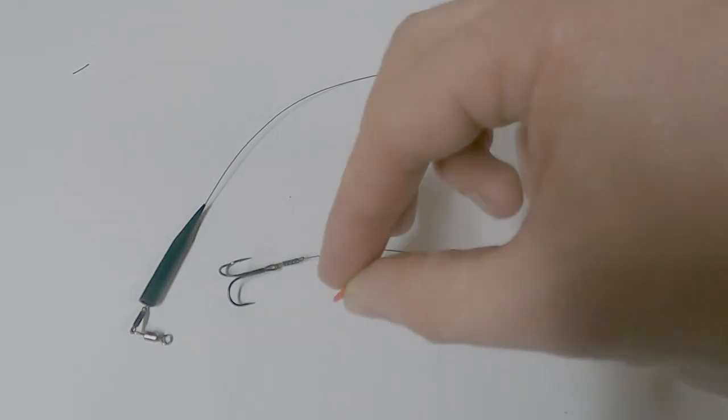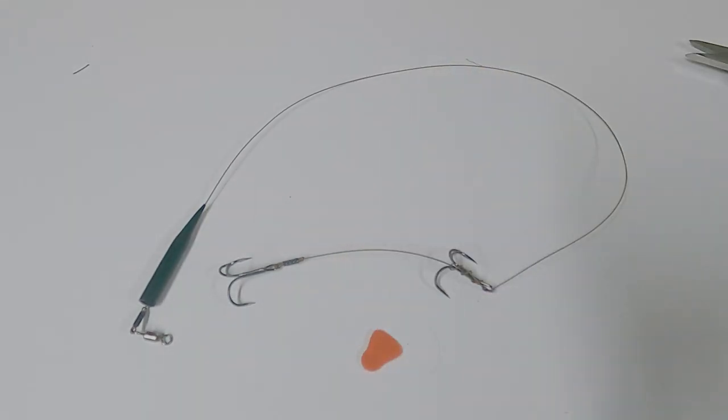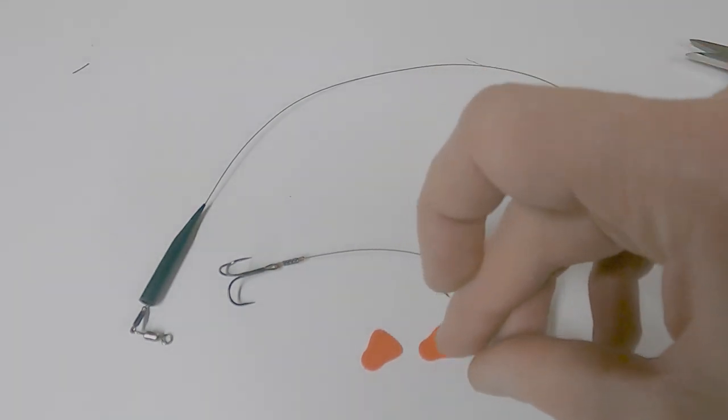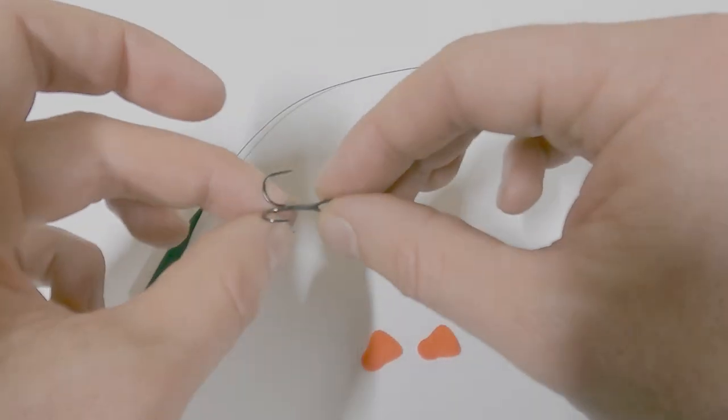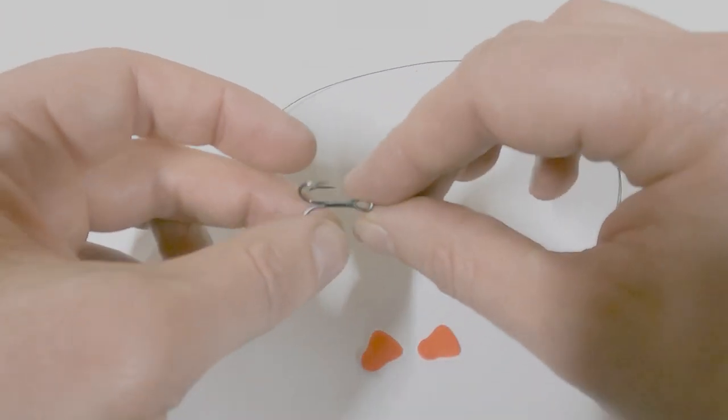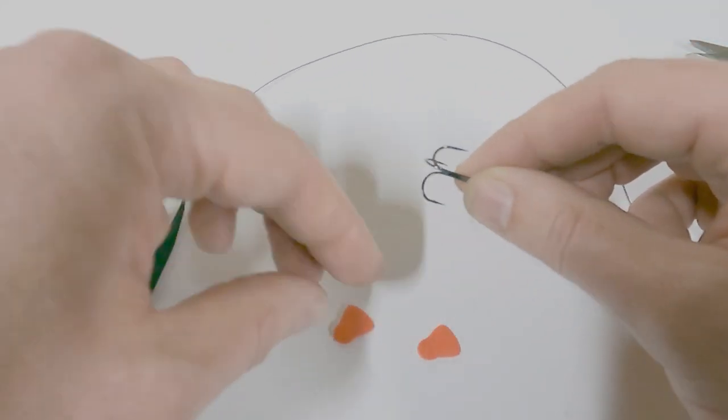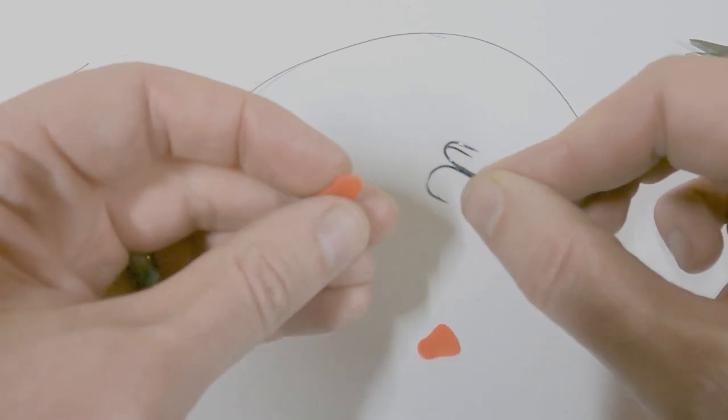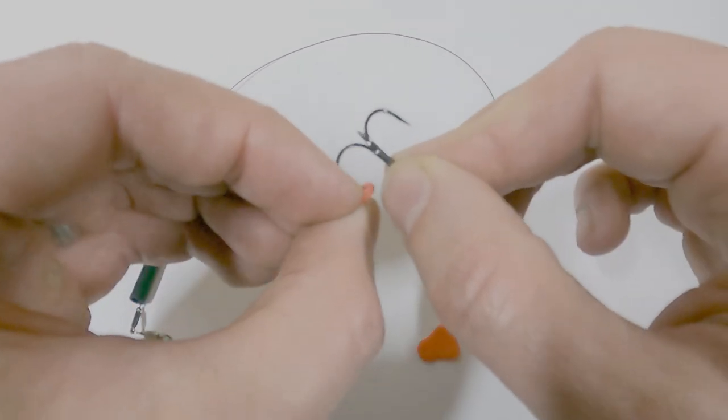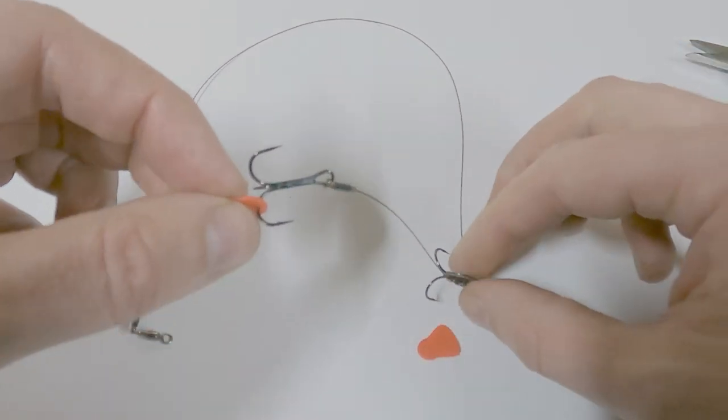And one final thing I like to do. Get some red bait fins. And I like to put them on the barbed point. Because these are semi-barbed, only one of these points has got a barb on.